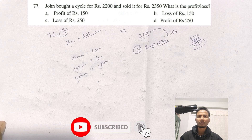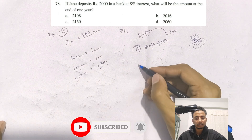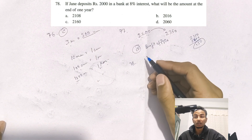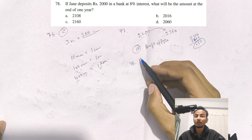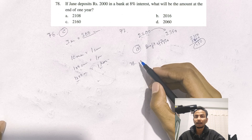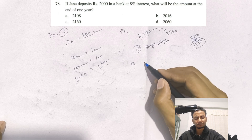The next question: If Jin deposits Rs. 2000 in the bank at 8% interest, what will be the amount at the end of one year?